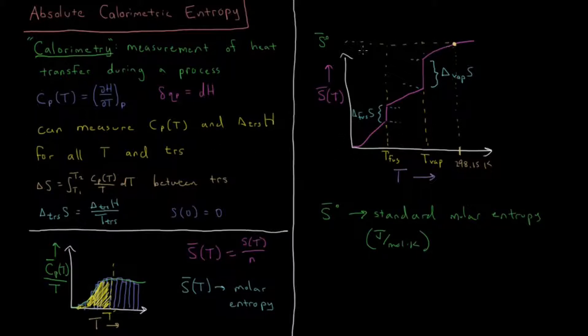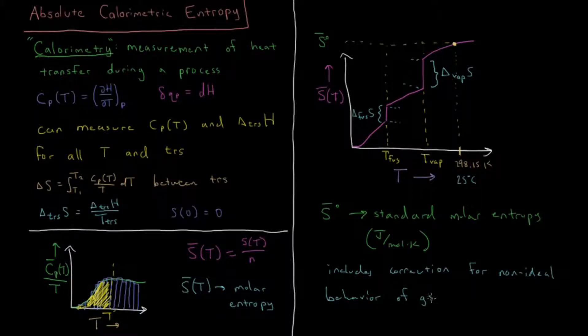And this would include the entropy at 298.15 Kelvin, which is also 25 degrees Celsius, in case we forget there. This also includes a correction if the gas has any non-ideality to it. So if it doesn't perfectly obey the ideal gas law, as most gases don't, they obey it approximately at standard conditions, but there is some discrepancy for pretty much every gas. So this includes a correction for any non-ideal behavior of that gas as well. And that's at 298.15 Kelvin.